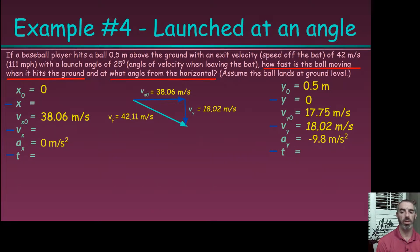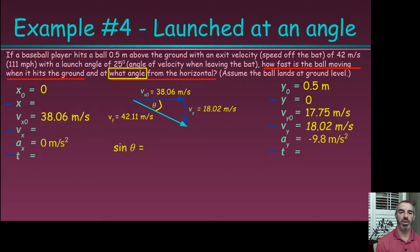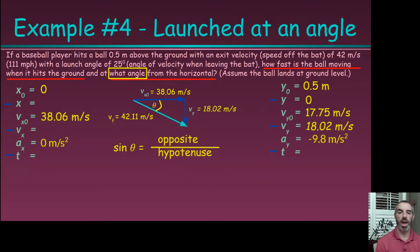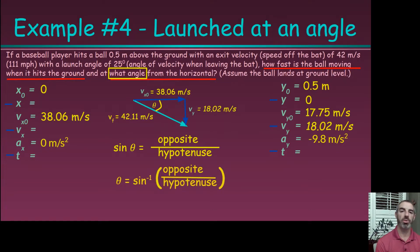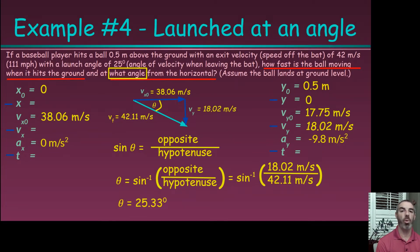The last question is: at what angle from the horizontal does the ball hit the ground? With all three sides of the right triangle known, we can use any trig function. Using sine — opposite over hypotenuse — sine of theta equals 18.02 divided by 42.11. Solving for theta requires the inverse sine function, which is the second-sine button on your calculator. Theta equals inverse sine of 18.02 over 42.11, which gives 25.33 degrees — the impact angle when the ball hits the ground.